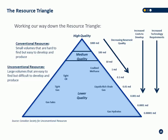Gas hydrates are the biggest hydrocarbon resource on the planet and we can't produce it economically right now. Above that, you've got shale gas — this was just unlocked in the last eight to ten years, more so in the last five. It's an enormous resource, but it's very expensive to produce and it took a lot of R&D and technology to unlock it.